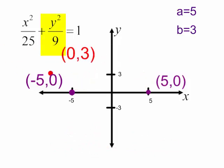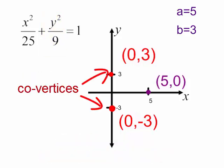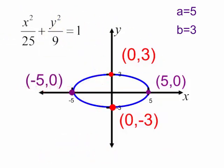So on the y-axis, I will go up 3, and I will go down 3. These are the co-vertices. That is my ellipse.